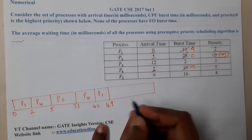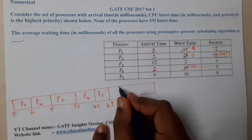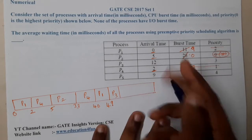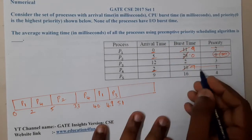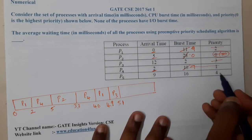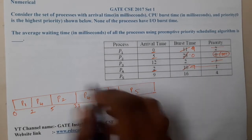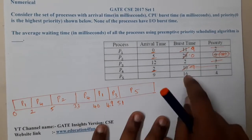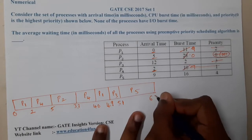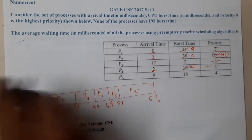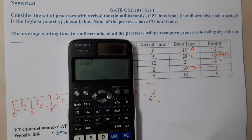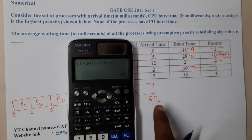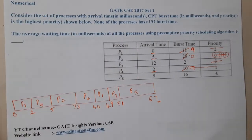Next, priority 3 is P3 with 2 milliseconds, completing at time 51. Finally, P5 runs from 51, and 51 plus 16 equals 67. At the end of time 67, all processes have completed. Verifying: 11 plus 28 plus 2 plus 10 plus 16 equals 67 — it is exactly matching.